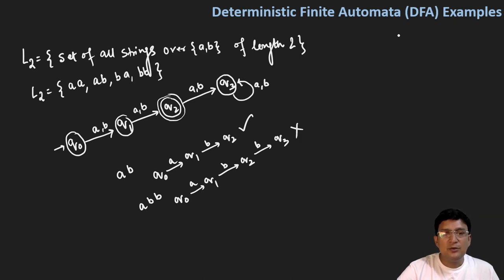So we have started with the task that the two length string should get accepted by this automata and the three length string should get rejected by this automata. Now just to verify if we have listed out all the transitions with every input symbol or not.